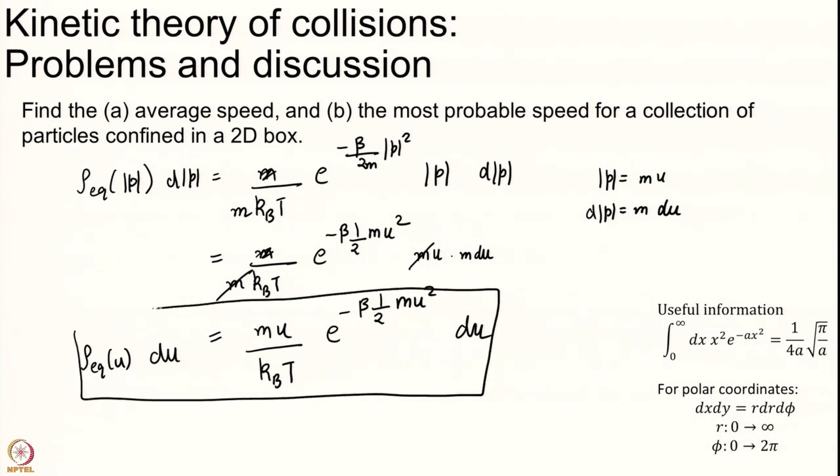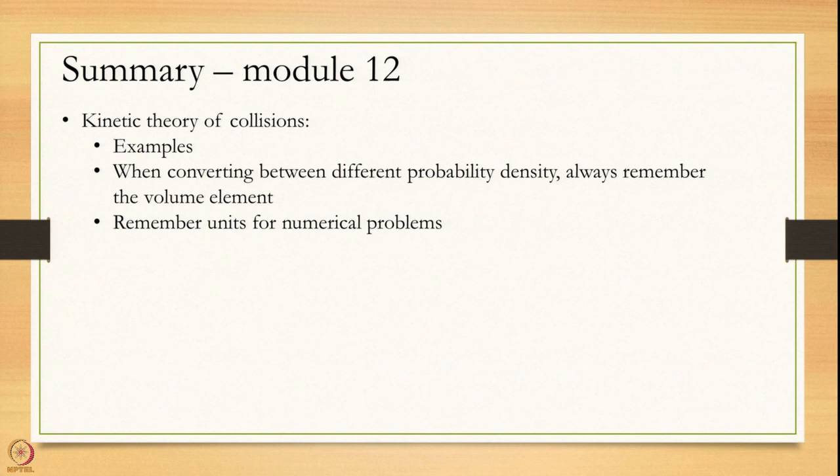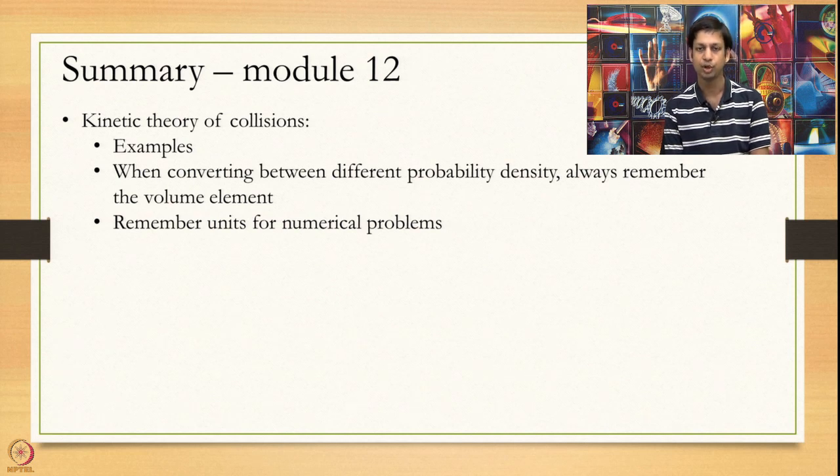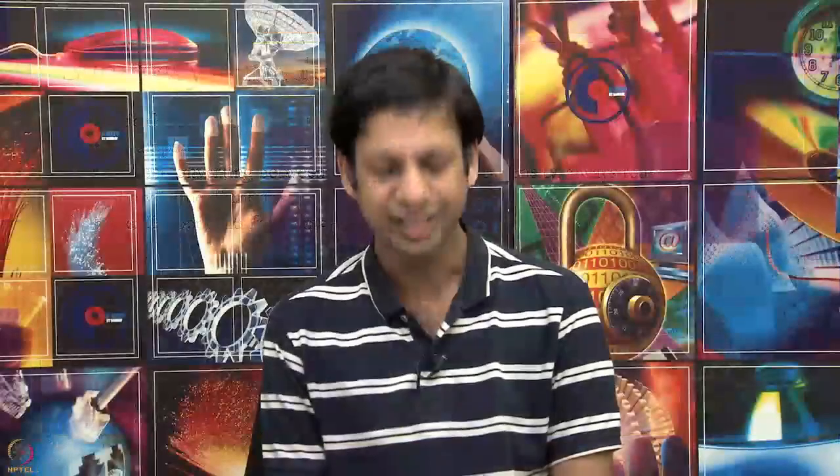Once we have found the equilibrium density, we will then find the average speed and most probable speed. In summary, today we have solved a few more examples. Two important points to note. When you are transforming in between units, remember your volume element. When you are doing a numerical calculation, remember your units. Thank you.